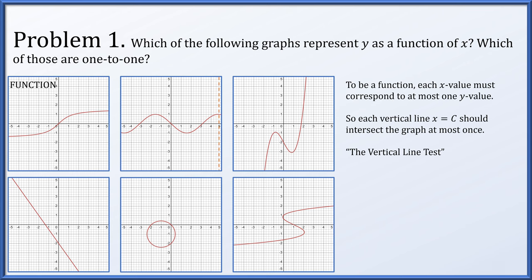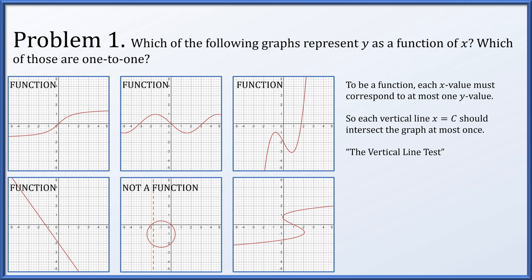The next graph: still only one intersection at a time — it's a function. The next: still only one intersection at a time, so it's a function. In the bottom left, one intersection at a time — still a function. The next graph: here's a vertical line that intersects the graph more than once, so it's not a function. And finally, vertical lines can also intersect the last graph more than once, so this one is not a function either.